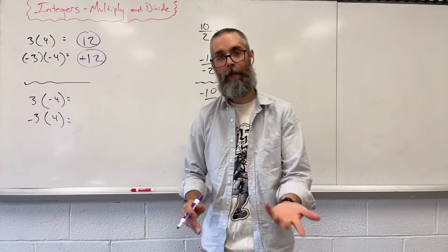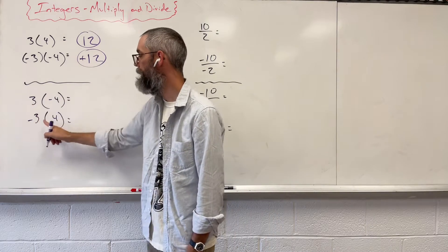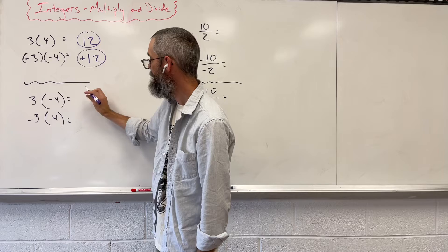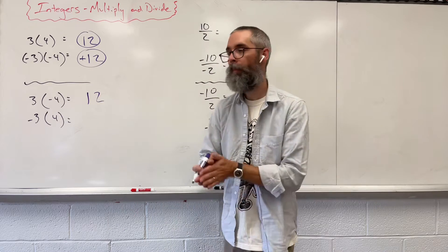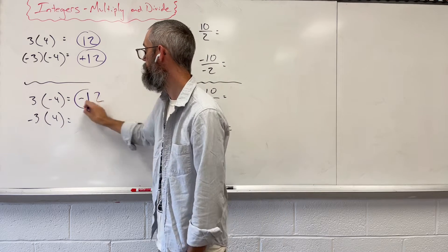You do not need to show that. However, when you have a positive and a negative, or negative and positive, you're still getting 12, 3 times 4. But when you have different signs, different signs mean negative.